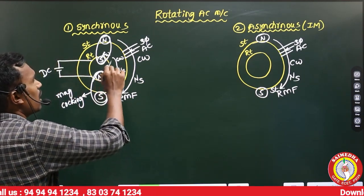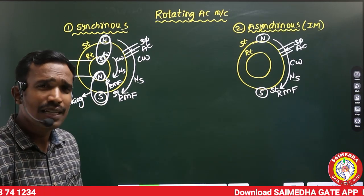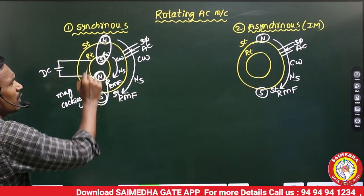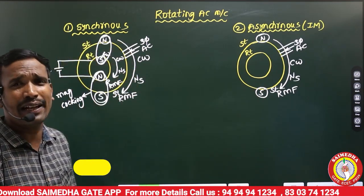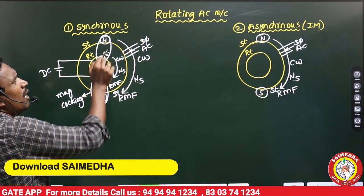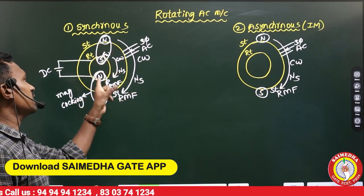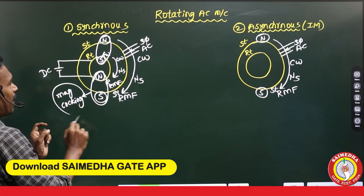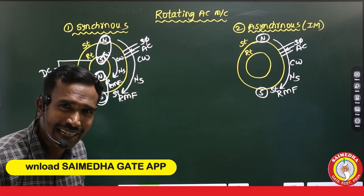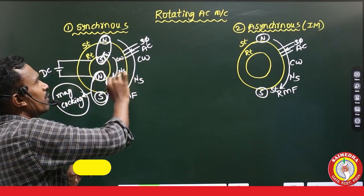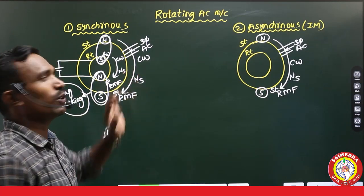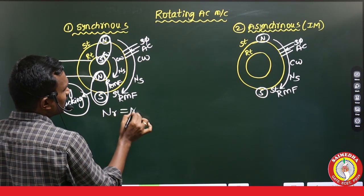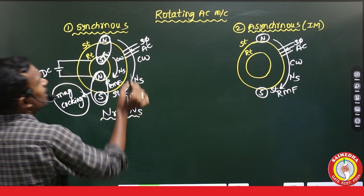After magnetic locking, the rotor constantly rotates at synchronous speed. The synchronous motor is not a self-starting motor. We need to rotate the rotor in the same direction with the same speed, then give the DC supply. When poles are created, the attraction force develops between them and is converted into magnetic locking. After this magnetic locking, the rotor will rotate in clockwise direction at synchronous speed. Due to this magnetic locking, the rotor rotates at synchronous speed in a synchronous machine.